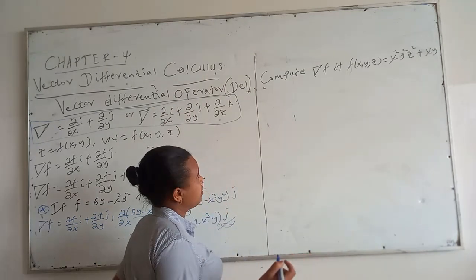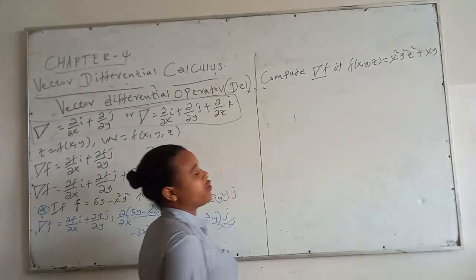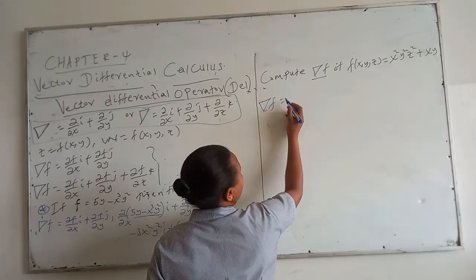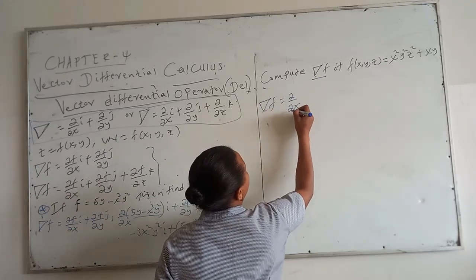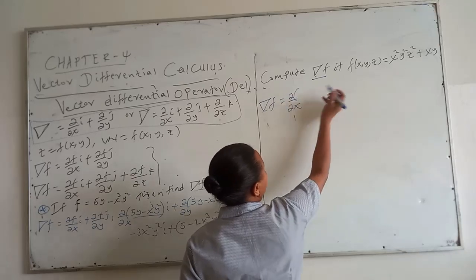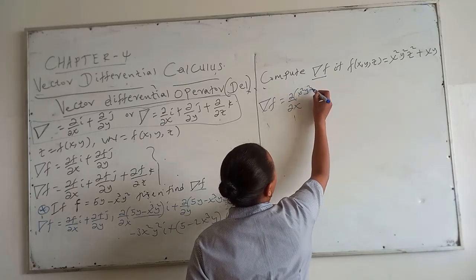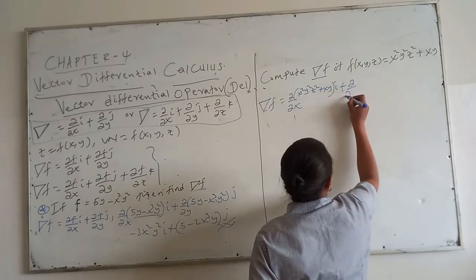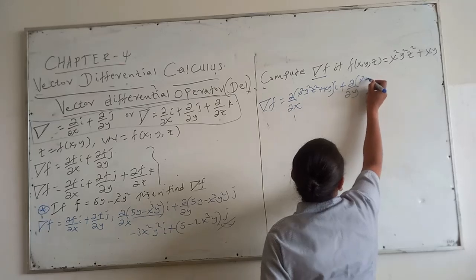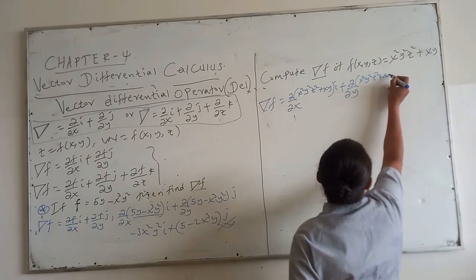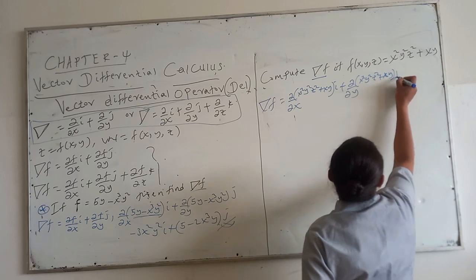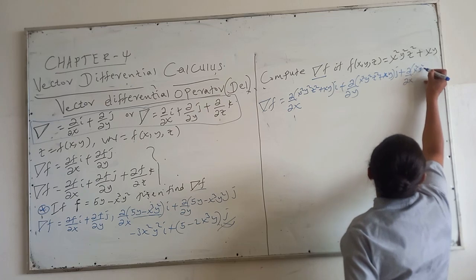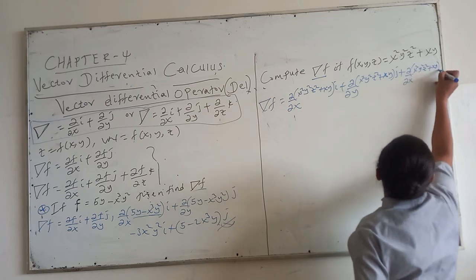We will compute del of f again, where f(x, y, z) = x²y²z² + xy. Del of f equals the partial of f with respect to x in i, plus the partial of f with respect to y in j, plus the partial of f with respect to z in k.